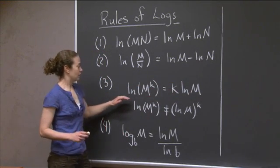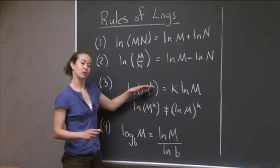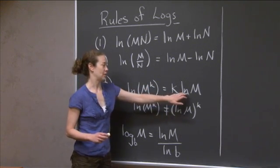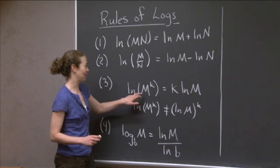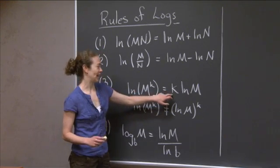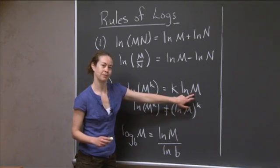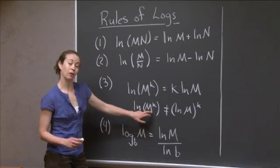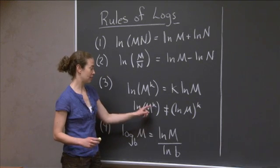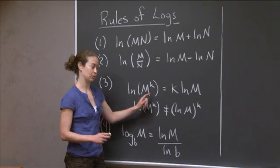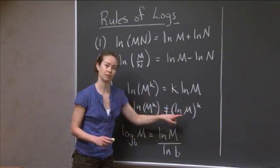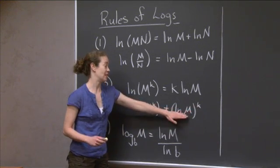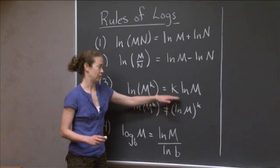The third rule says that the natural log of something raised to a power is that power as a coefficient times the natural log of the something. So natural log of m to the k is equal to k times natural log of m. There's a distinct difference in where the power is: if the power is inside the argument, this rule holds. But if the power is outside the argument — if it's the natural log of m with the whole thing raised to a power — this does not work.